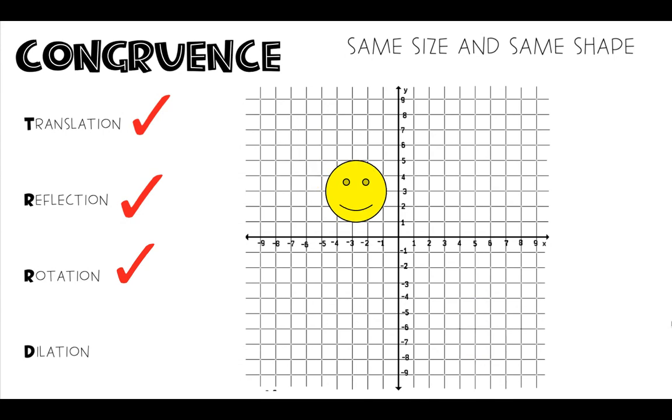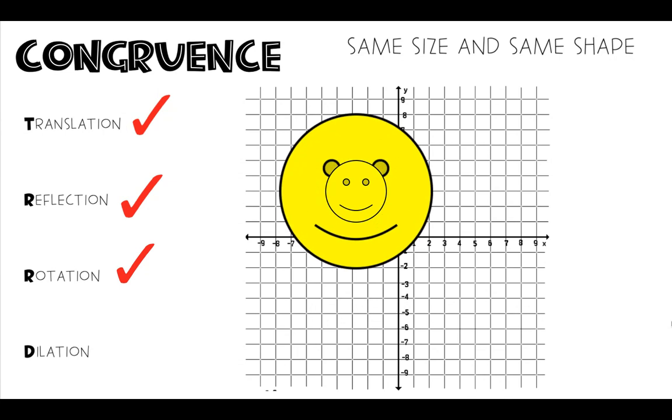And our last one is a dilation. So if we dilate our shape, in this case, if we make it bigger, is it still the same shape? Yes, but is it still the same size? No, because the dilation is all about making it bigger or making it smaller. So that does not preserve congruence.